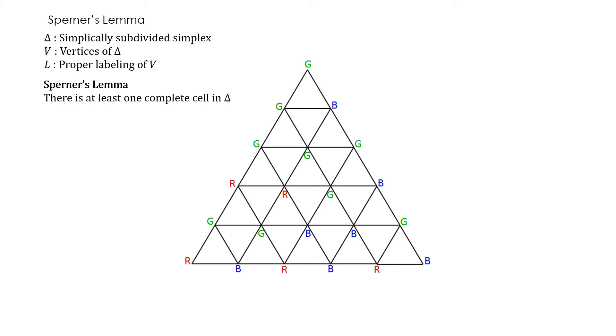Sperner's lemma tells us that there is at least one complete cell. Each of these smaller triangles is a cell. There is at least one complete cell in delta, which is the simplicial subdivision. So here we can see there is one small RGB triangle. Here's another one. And in fact there are quite a few of them here.